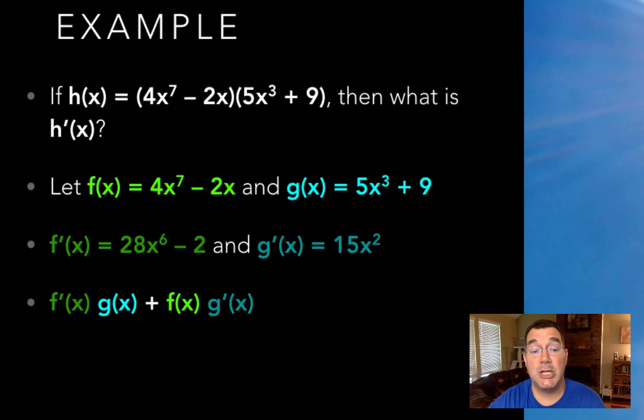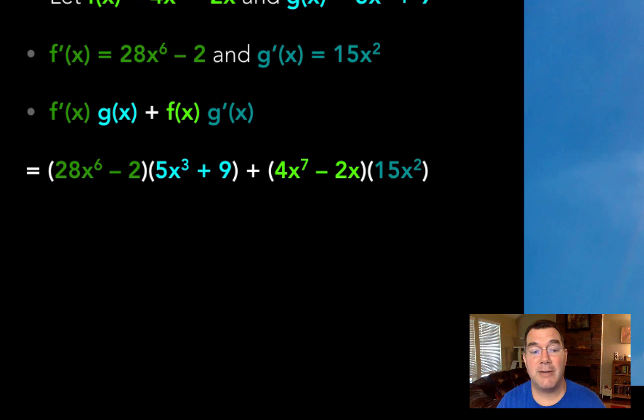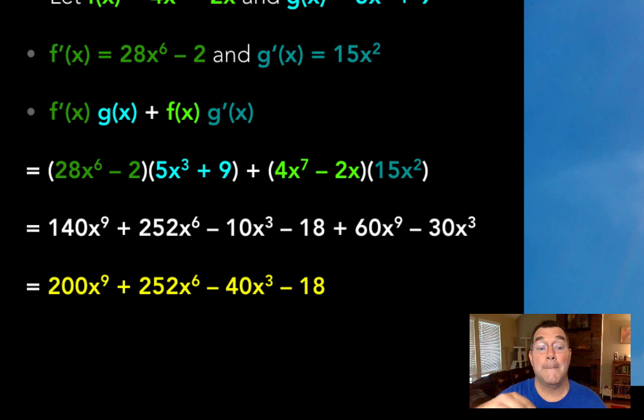f prime times g plus f times g prime is going to be 28x to the 6 minus 2 times 5x to the 3rd plus 9 plus 4x to the 7 minus 2x times 15x squared. And if I simplify, if I multiply those out, I get 140x to the 9 plus 252x to the 6 minus 10x to the 3rd minus 18 plus 60x to the 9 minus 30x to the 3rd. And that gives me 200x to the 9 plus 252x to the 6 minus 40x to the 3rd minus 18.